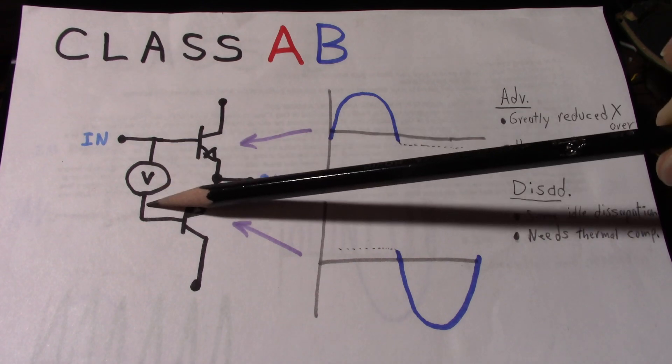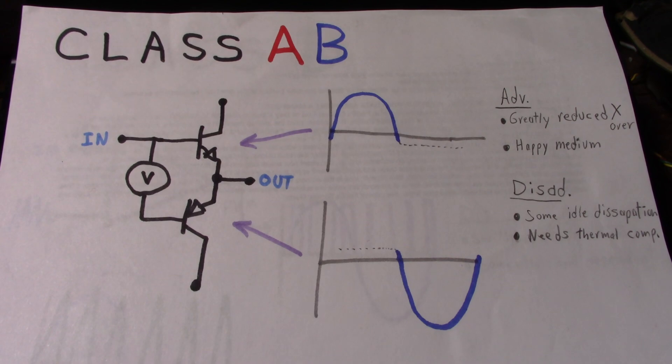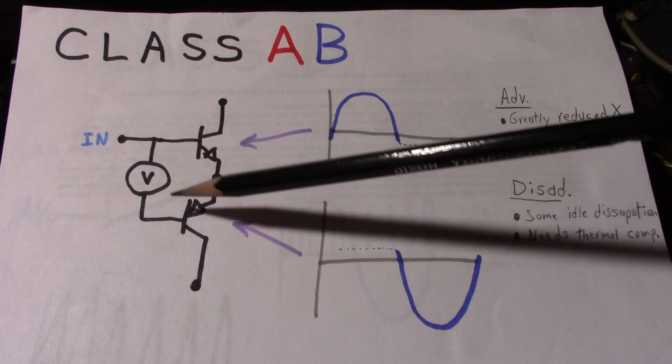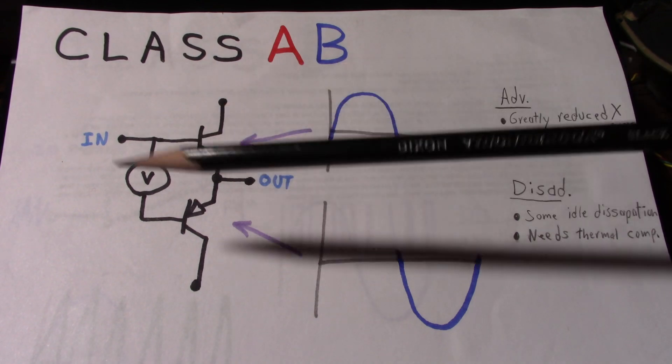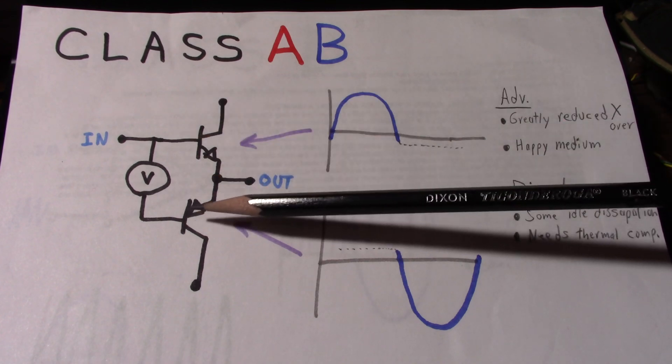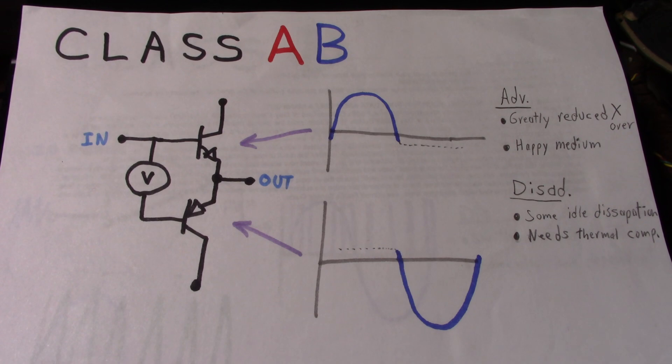So part of this voltage supply here we put across the bases is also a thermal compensation network, which monitors the temperature and adjusts the voltage to keep the current in check. So whether the amp has been delivering a lot of power and the heat sinks are real hot, the transistors are quite hot, or you just first turn it on, the bias current will be kept about the same. So yeah, it's not really a problem with a decent thermal compensation circuit, but it's just an extra piece that needs to be included in a Class AB amplifier circuit.